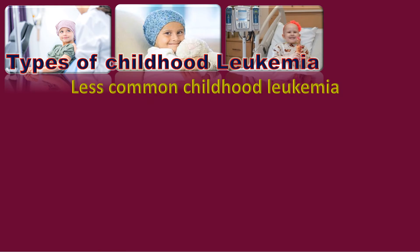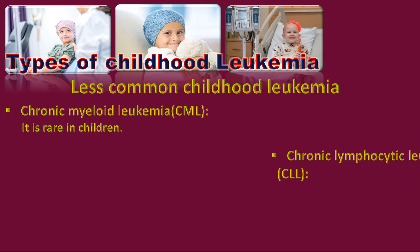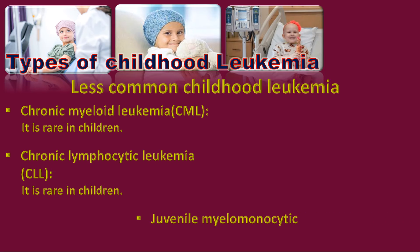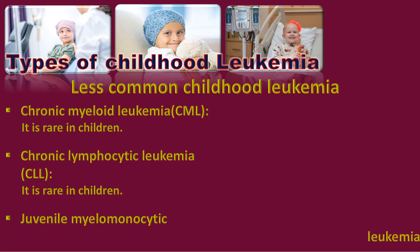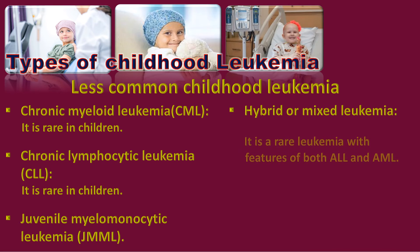Other less common childhood leukemias include chronic myeloid leukemia (CML), which is very rare in children; chronic lymphocytic leukemia (CLL), also very rare in children; juvenile myelomonocytic leukemia (JMML); and hybrid or mixed leukemia, a rare kind with features of both ALL and AML.